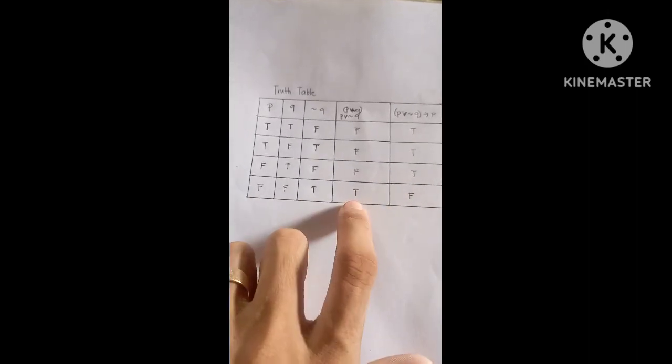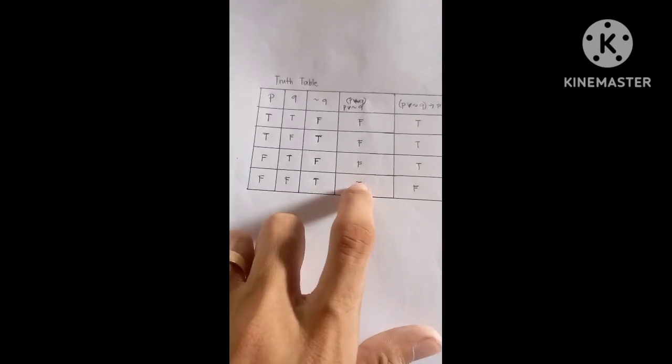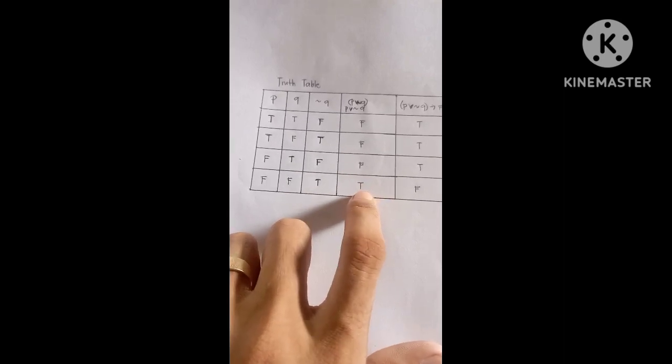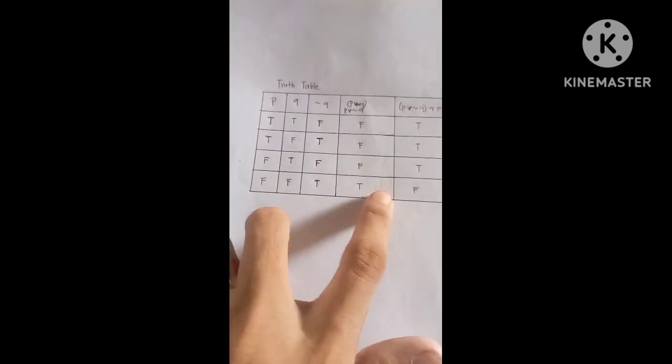And then if the P V not Q is true, and then the P is false, it is false.